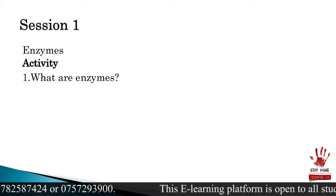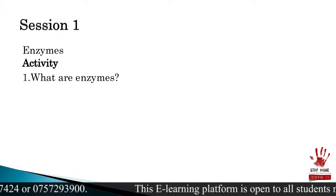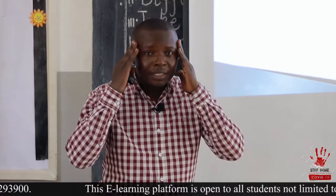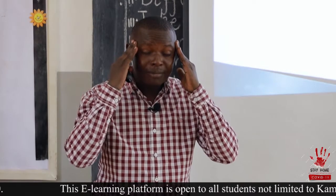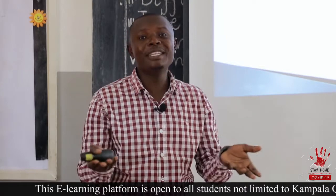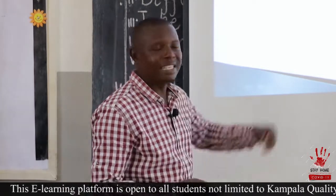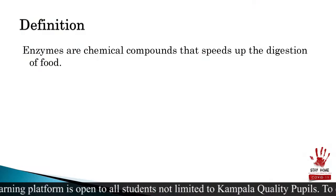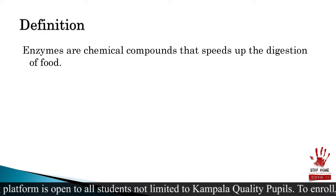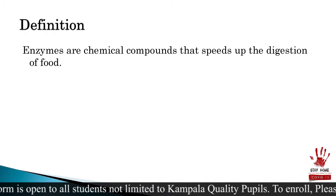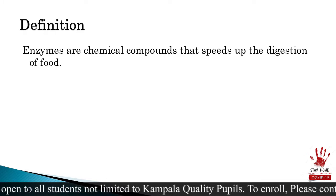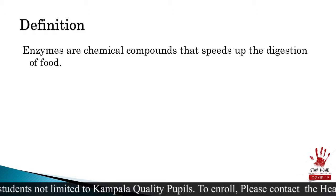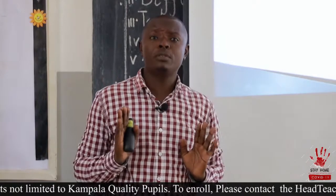What are enzymes? Chemical digestion is the type of digestion where food is broken down by chemicals called enzymes. Think about it for a moment. Enzymes are chemical substances or compounds that speed up the digestion of food. That is their major function — to speed up digestion.